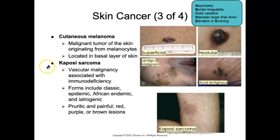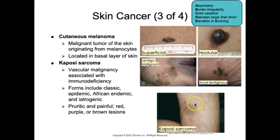Kaposi sarcoma is a vascular malignancy associated with immunodeficiency, occurring in transplant recipients, those taking immunosuppressive drugs, or those with immunosuppressive diseases such as HIV. There are different forms: the classic form is more benign; the epidemic form is rapidly progressive and associated with AIDS; the African endemic type is associated with HPV; and the iatrogenic form is associated with immunosuppressive treatment such as organ transplants. The lesions can be pruritic and painful, varying in color from red, purple, or brown macules, and can develop into plaques and nodules.